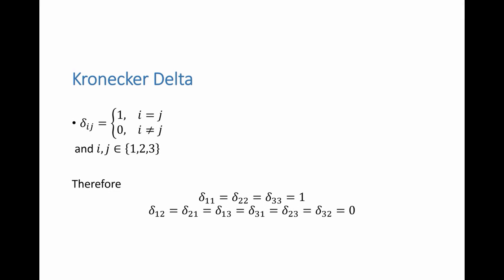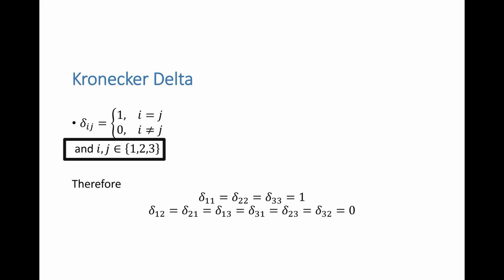Two more symbols we will be using. The first is the Kronecker delta. Delta_{IJ} is a function of I and J: it gives 1 if I equals J, and 0 if I does not equal J, where I and J are between 1 and 3. Therefore, delta_{11} = delta_{22} = delta_{33} = 1, and all other components — whenever I and J are not equal — are 0.